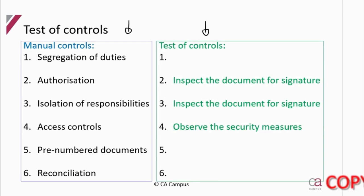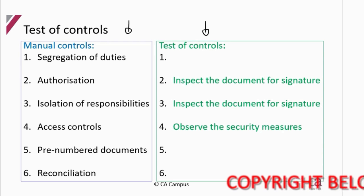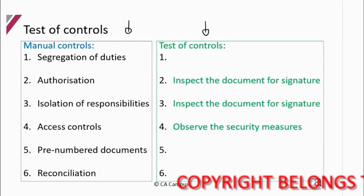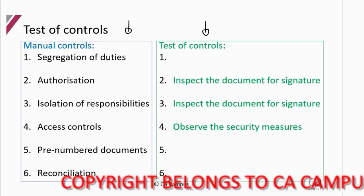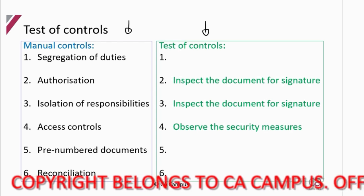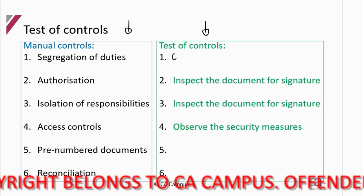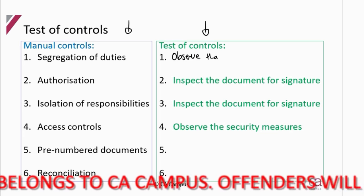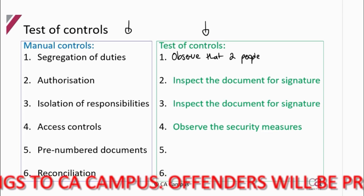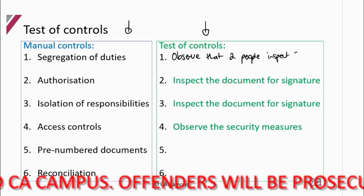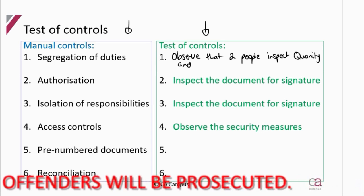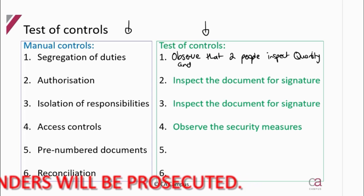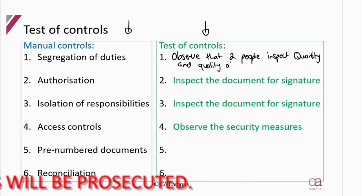Segregation of duties is where two or more people will perform a function. For example, in the purchases cycle, two people will receive the goods that are being delivered and check the quantity and the quality to make sure it's acceptable.